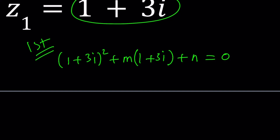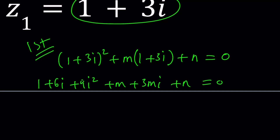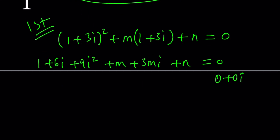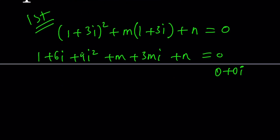This gives us (1 plus 3i) squared plus m times (1 plus 3i) plus n equals 0. Let's expand and simplify: 1 plus 6i plus 9i² plus m plus 3mi plus n equals 0. The left-hand side is a complex number, and the right-hand side is 0, which can be written as 0 plus 0i, so both the real part and the imaginary part equal zero.